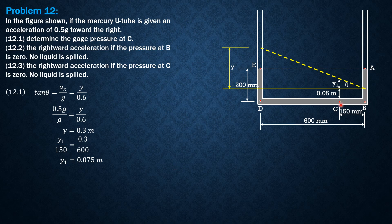Therefore, the pressure at C is equal to specific weight of mercury, 13.6 times 9.81 times quantity Y1 plus 0.05. Pressure at C is 16.68 kilopascals.